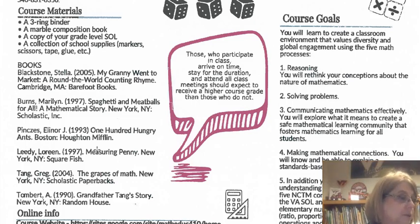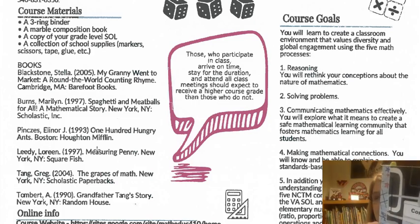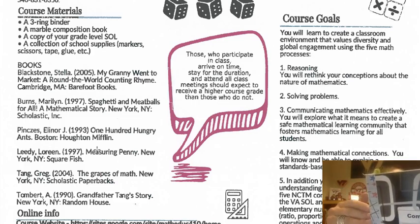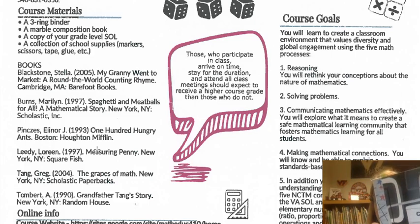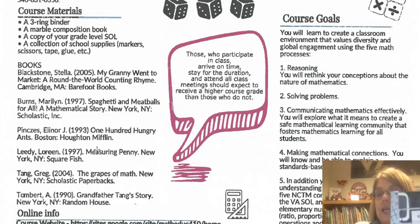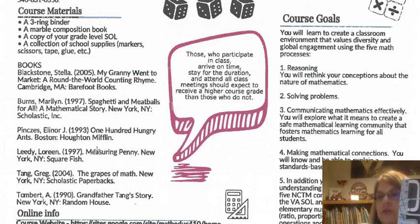I also forgot to mention: you need a marble composition book — meaning not one with a spiral binding. If you already have a spiral-bound one, that's fine. We are going to use these as our interactive math notebooks, taking notes and adding resources, learning how to use them as both a student and a teacher. If you can't find a composition book, a spiral-bound one is just fine.